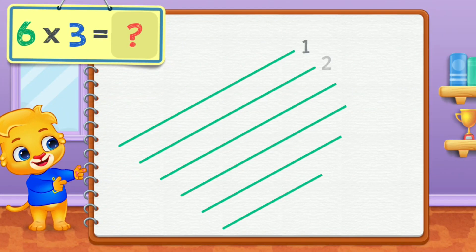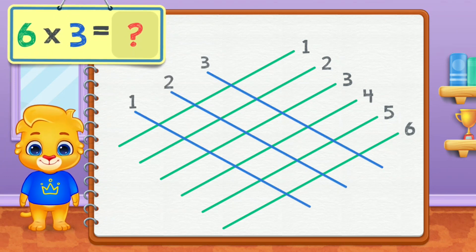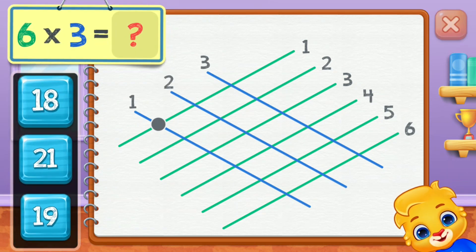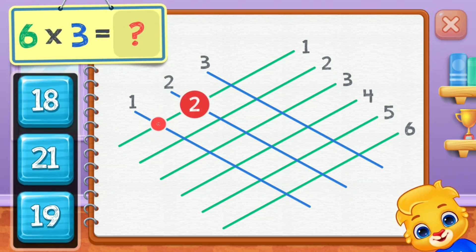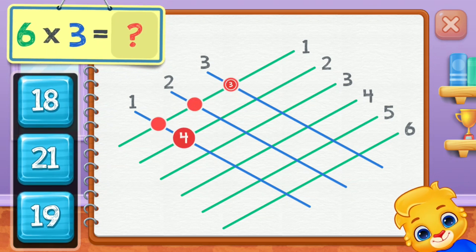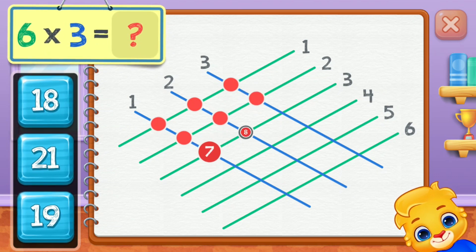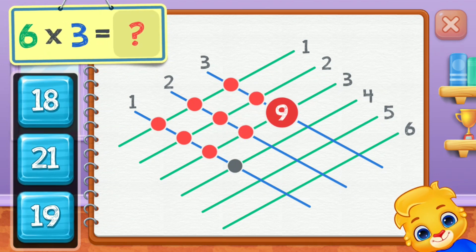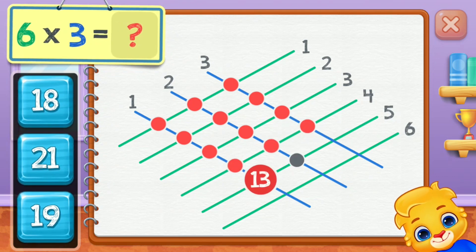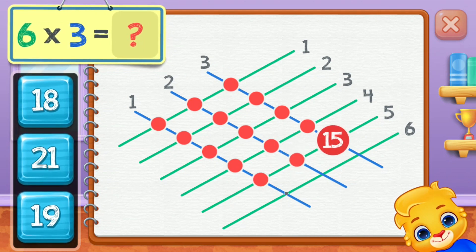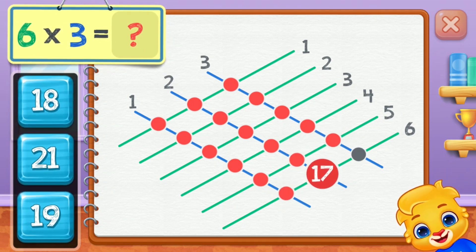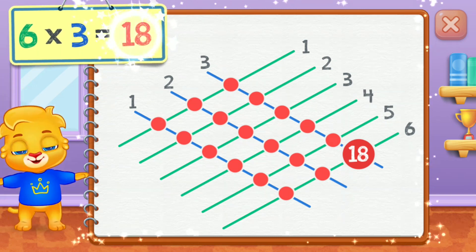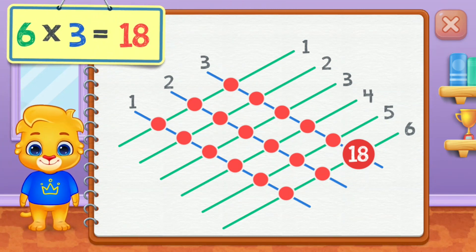Six times three equals... One, two, three, four, five, six, seven, eight, nine, ten, eleven, twelve, thirteen, fourteen, fifteen, sixteen, seventeen, eighteen. Six times three equals eighteen.